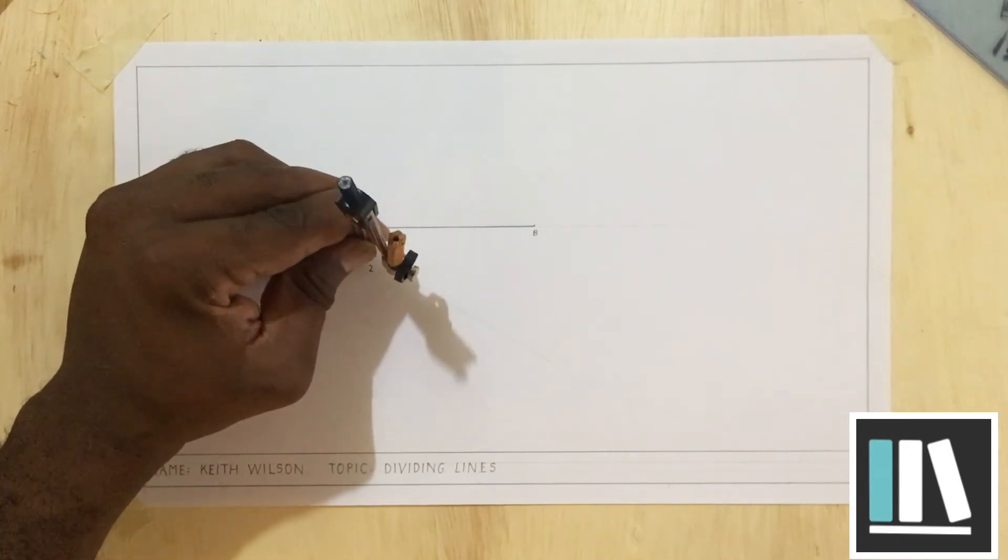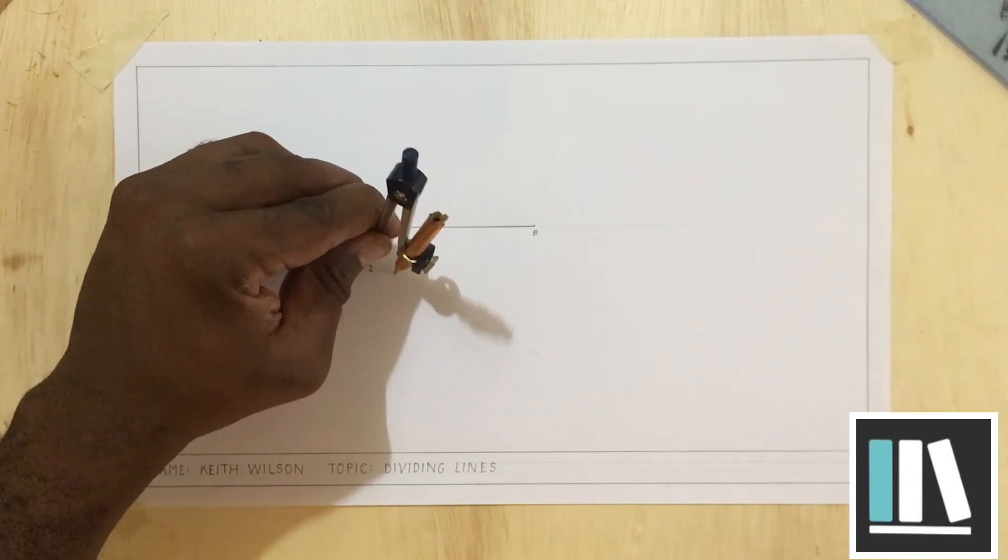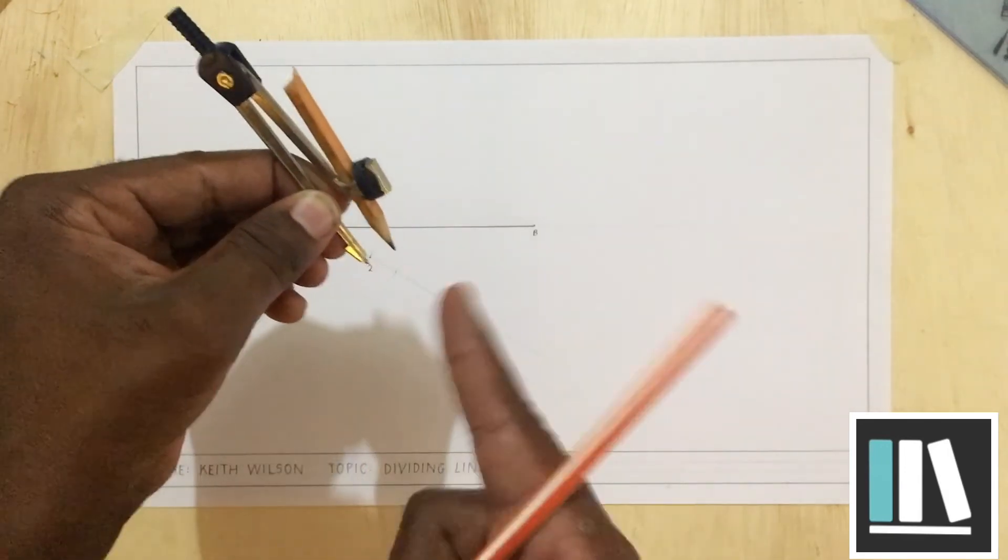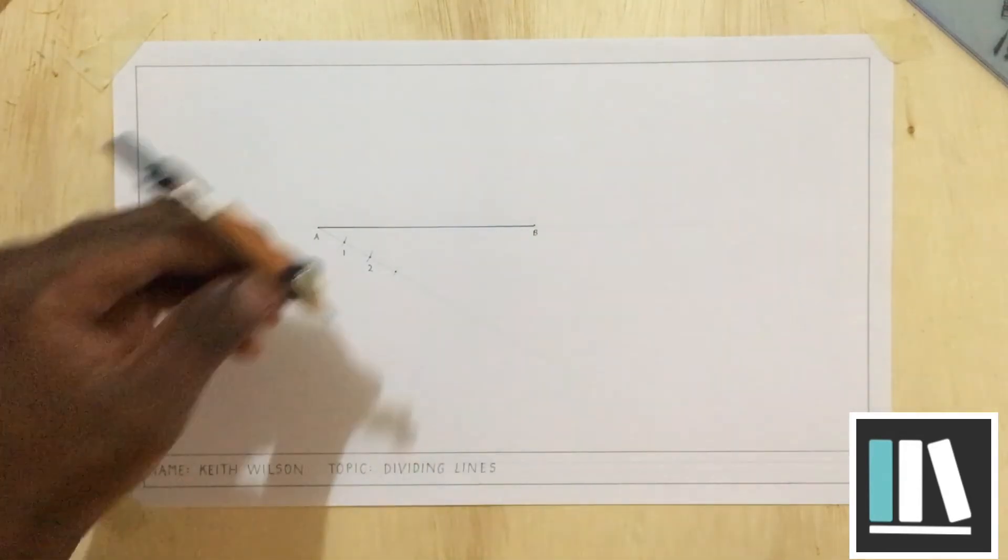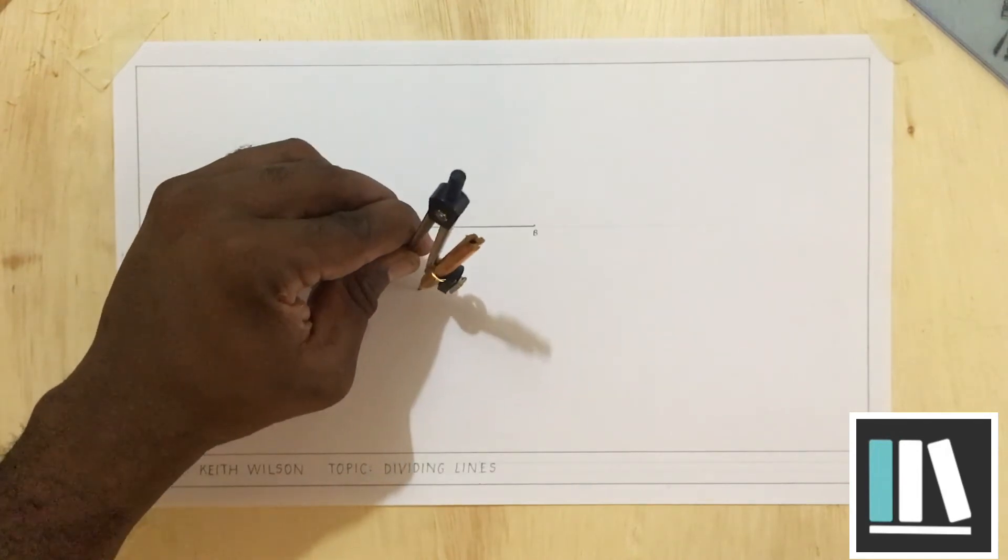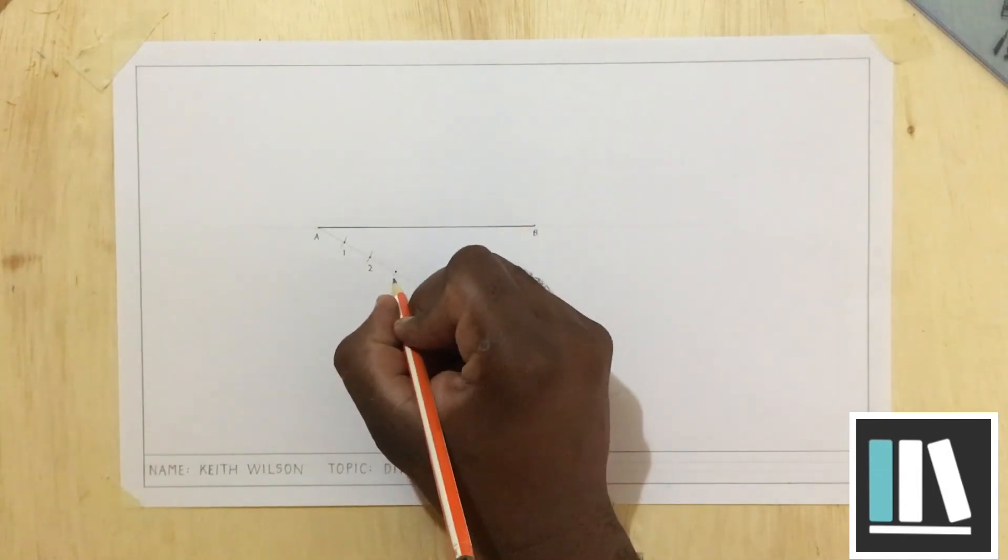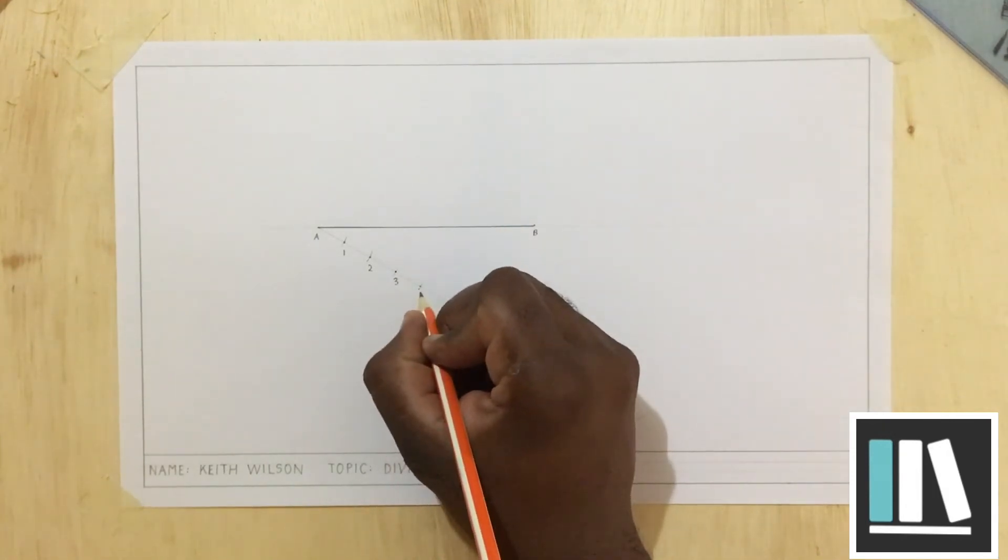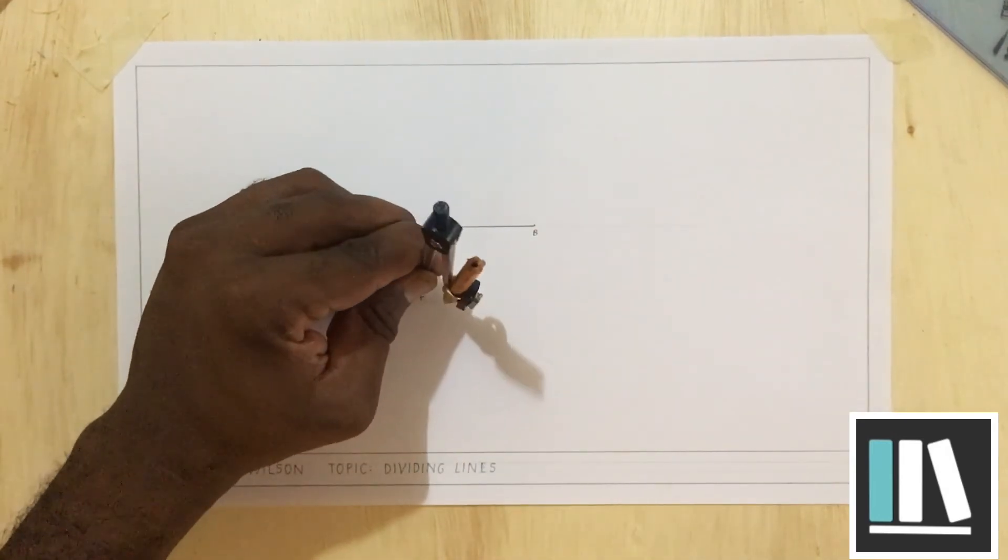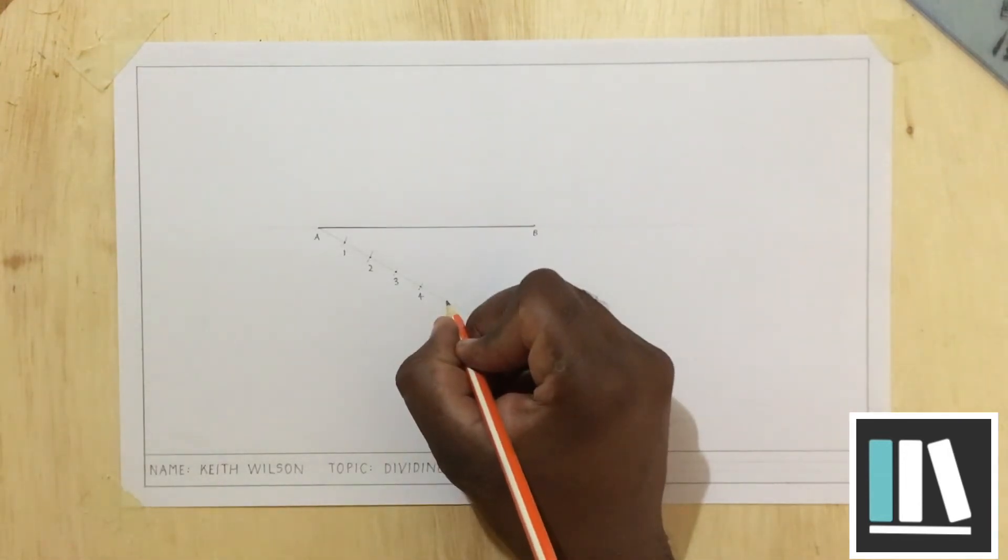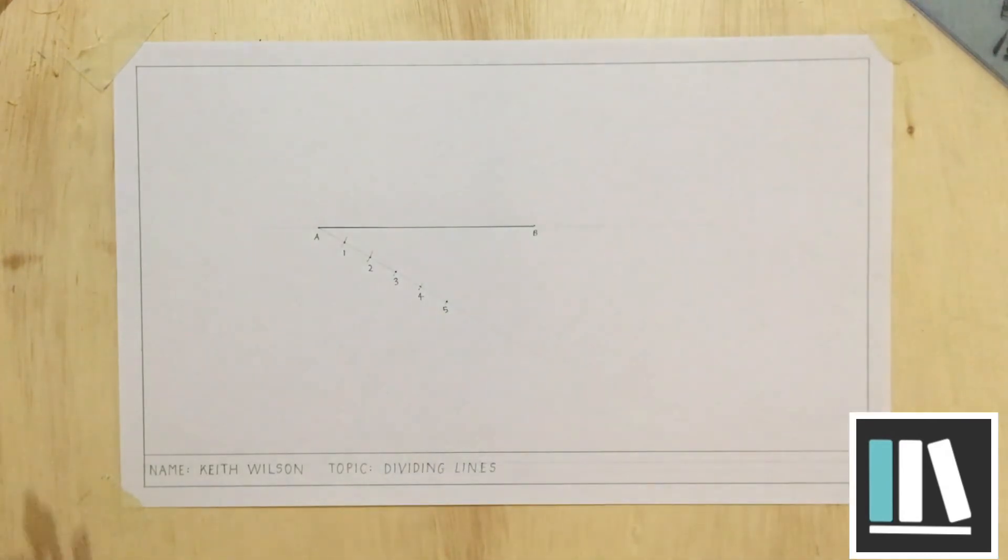At point two, I'm going to place my compass once more, swinging another arc with the same radius of the compass to get point three. Now we are going all the way to point five because we are dividing this line in five equal parts. Now, one more point to go.